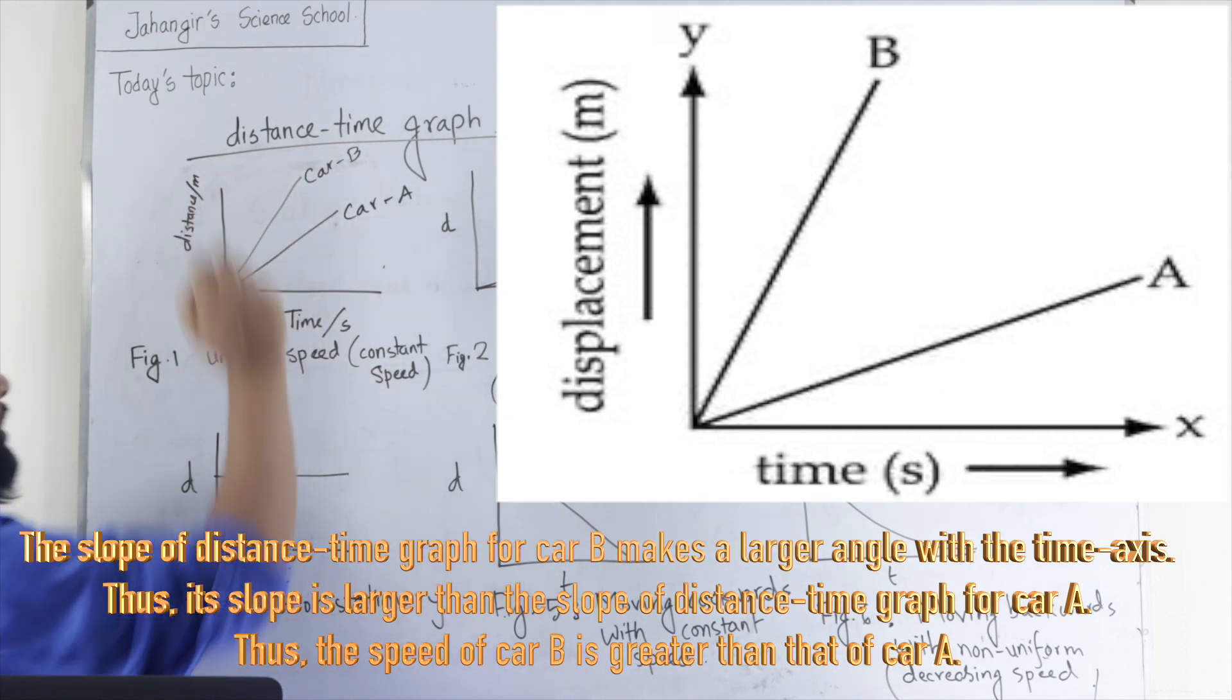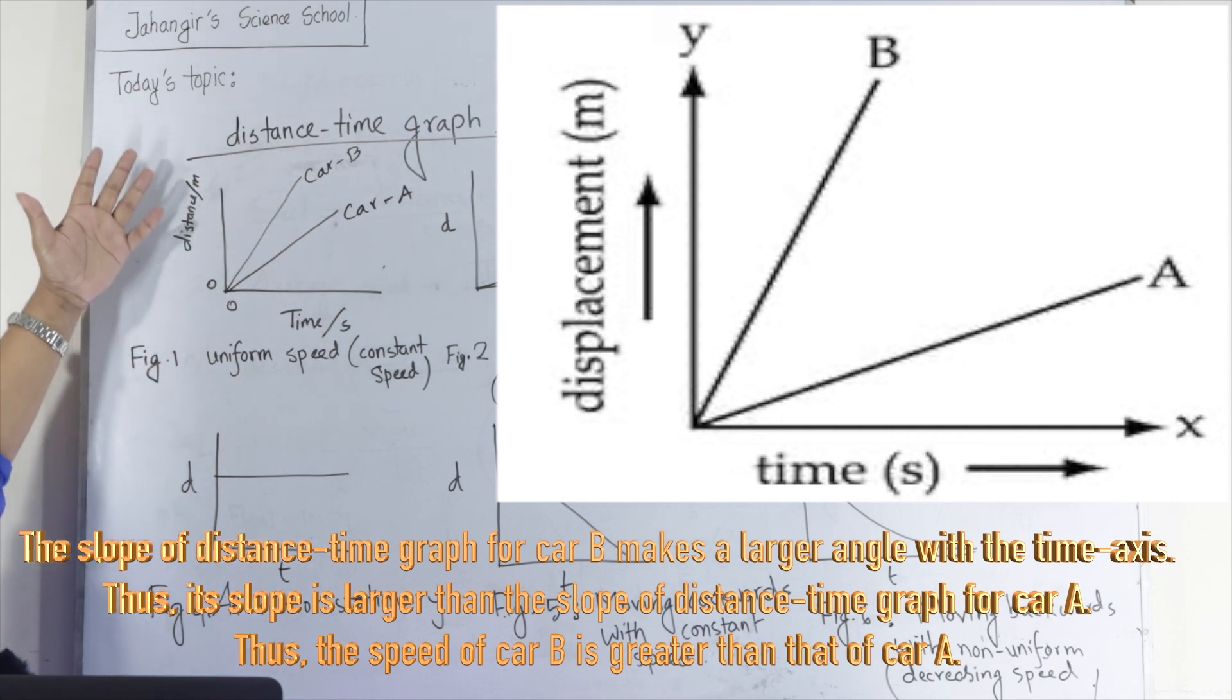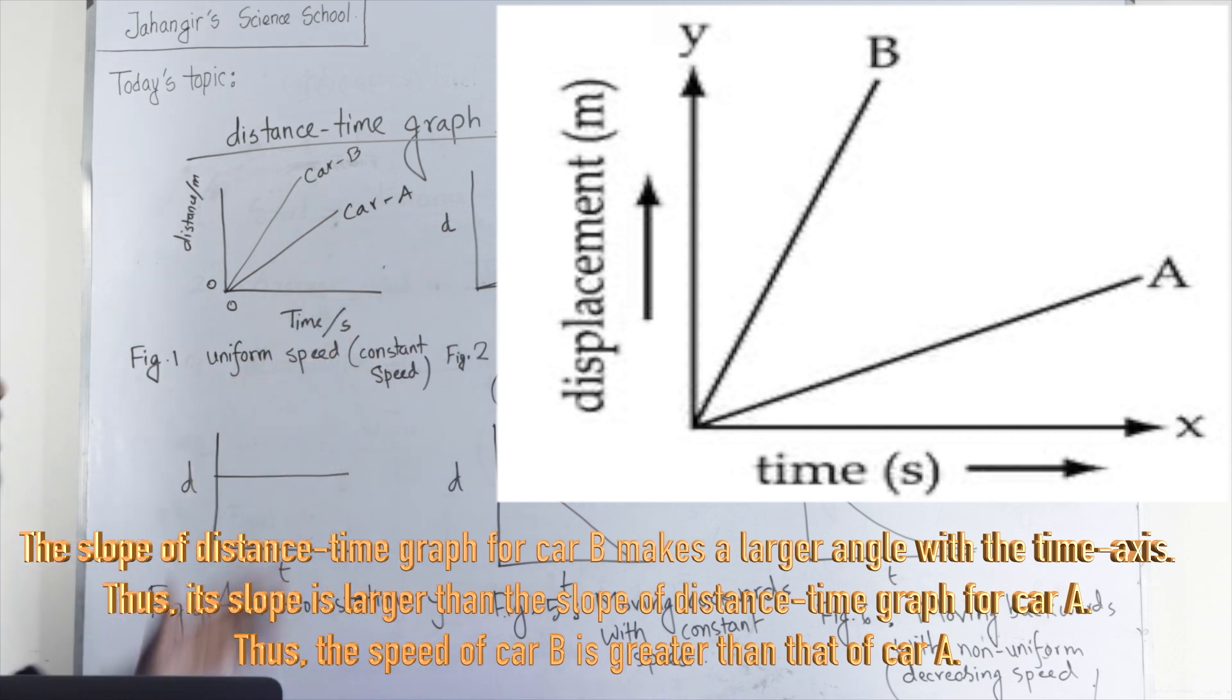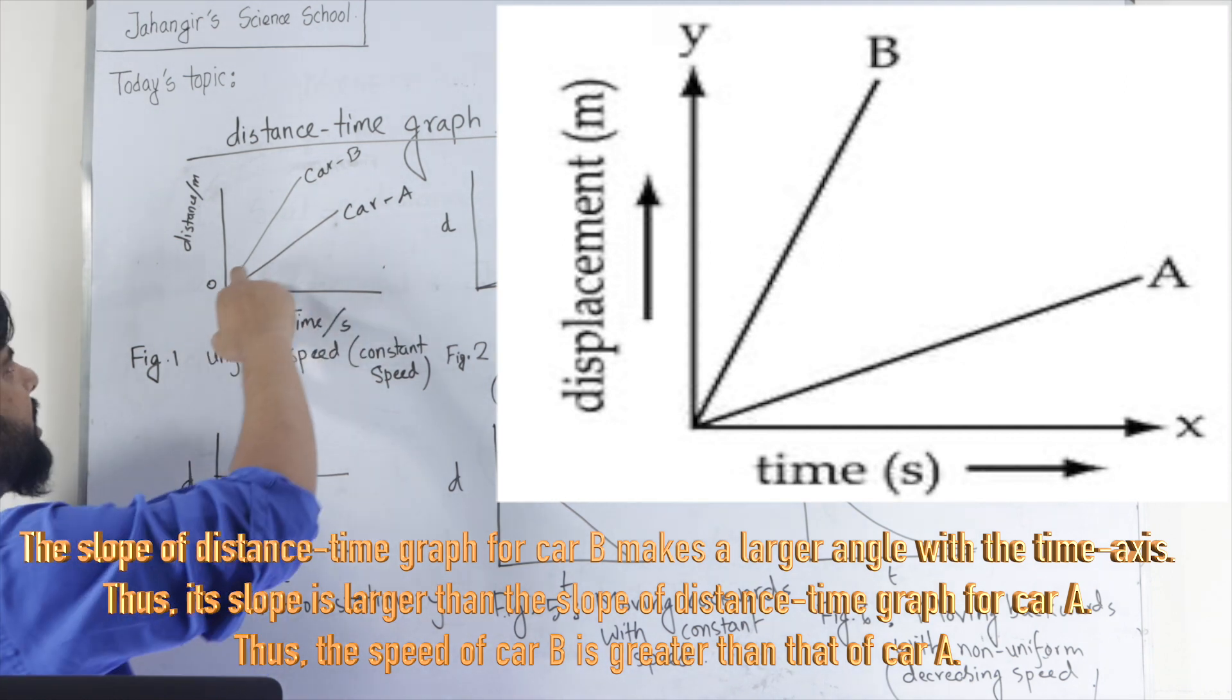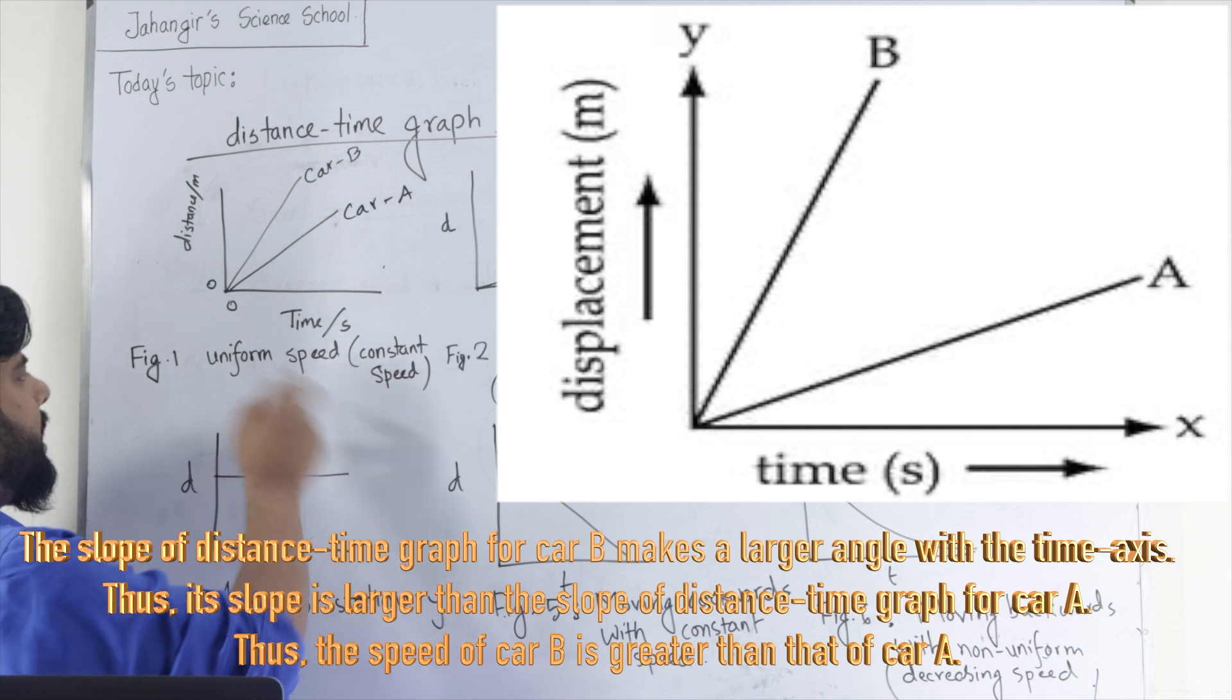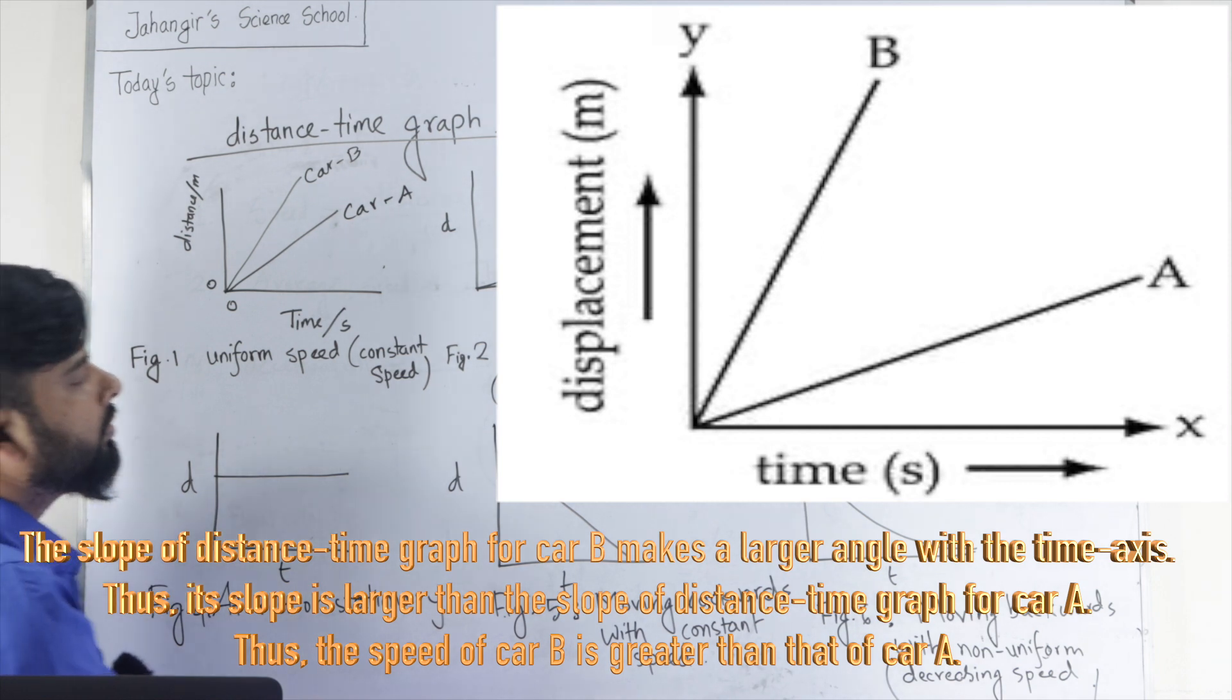Car A and car B. Here, the speed of car B is higher than the speed of car A. Because the gradient of the distance time graph for car B is greater or more. So, that's why speed of car B is higher than the speed of car A. Now,